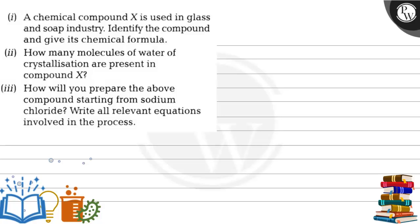Hello, let's read the question. The question says, a chemical compound X is used in glass and soap industry. Identify the compound and give its chemical formula.